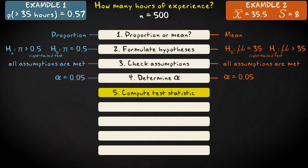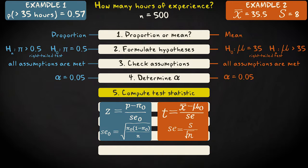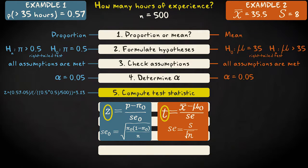Step 5: Compute your test statistic. In the case of a proportion, we use the z-distribution formula, and in the case of the mean, the t-distribution formula. In our examples, we get (0.57 − 0.5) divided by the square root of (0.5 × 0.5 / 500), which equals 3.13. And (35.5 − 35) divided by (8 divided by the square root of 500), which equals 1.40.